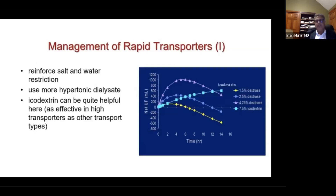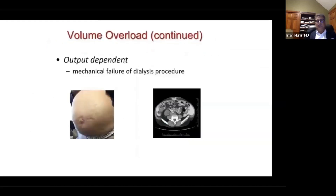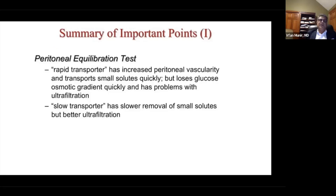Ultrafiltration failure is characterized by rapid dissipation of the osmotic gradient and poor ultrafiltration. Management includes salt and water restriction and use of loop diuretics. On the graph shown, the y-axis represents ultrafiltration and the x-axis represents time — the curve for icodextrin demonstrates sustained ultrafiltration over a longer dwell. A midday exchange with hypertonic dialysate can also be considered. Rapid transporters have increased peritoneal vascularity, characterized by PET testing, and transport small solutes quickly but lose glucose rapidly.